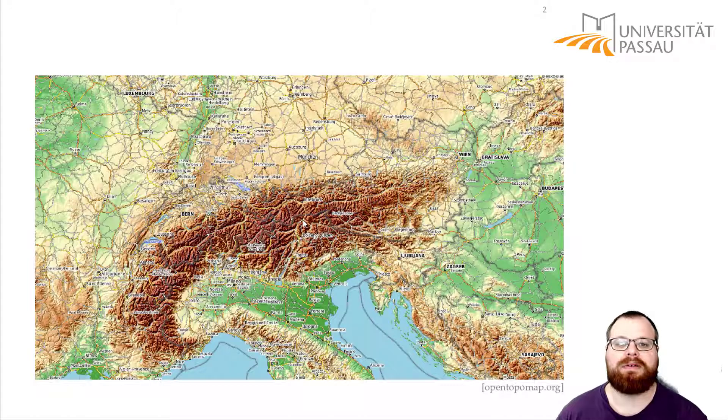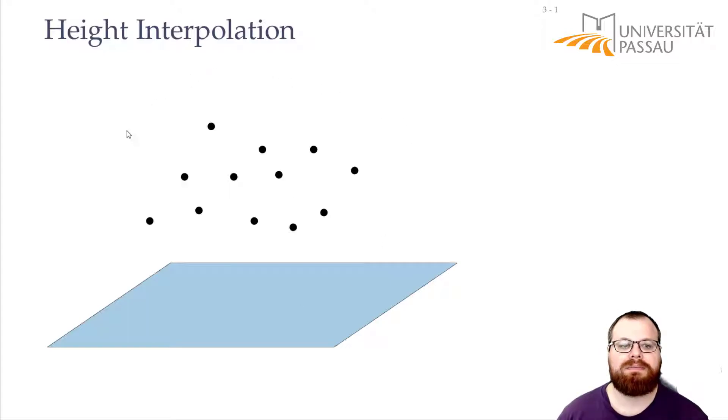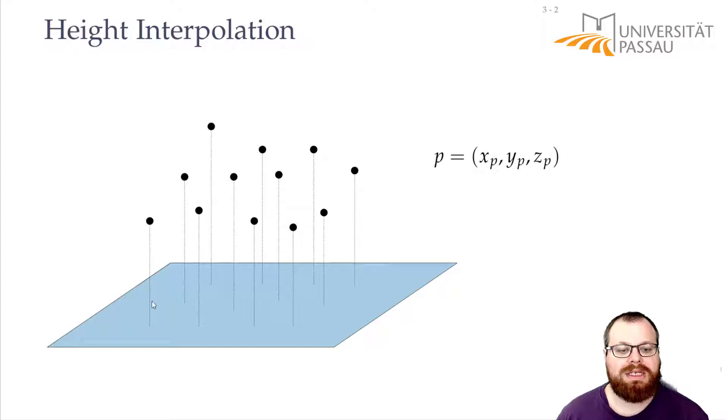Then we get some measuring points that tell us for these points in the plane we know what is the height of the topographical map here. So we have some three-dimensional points and if we want to draw it then we project it onto the plane.